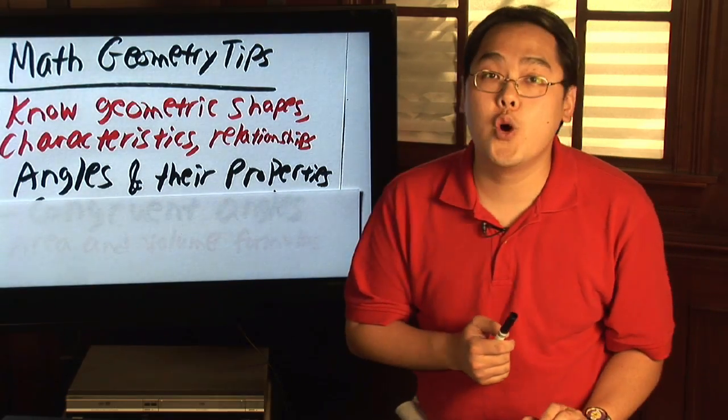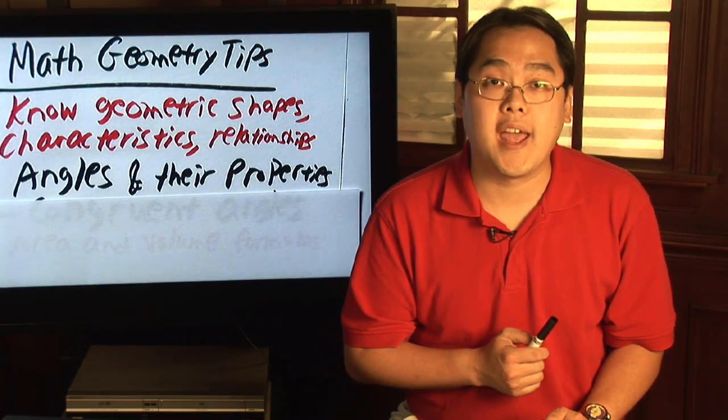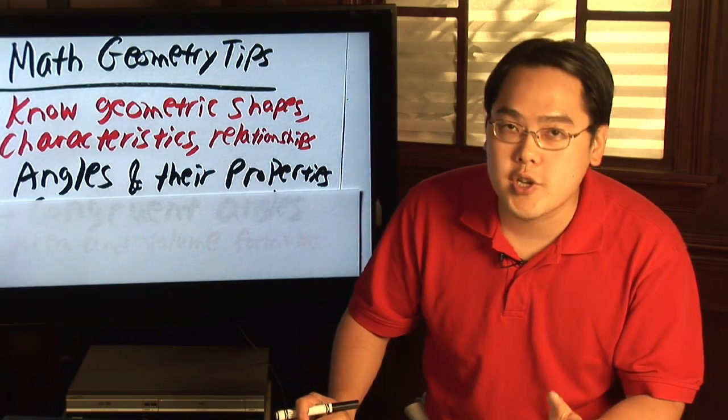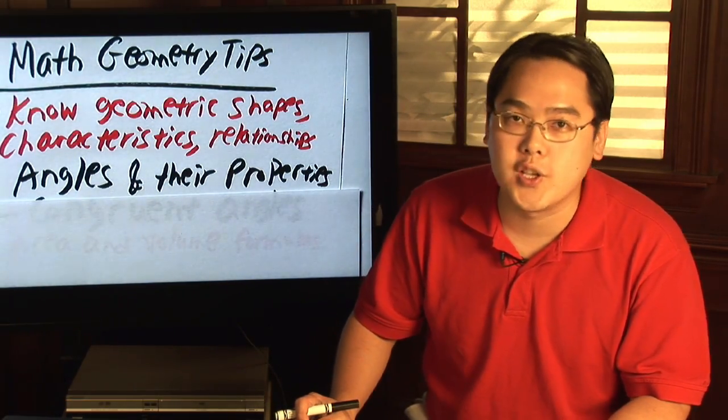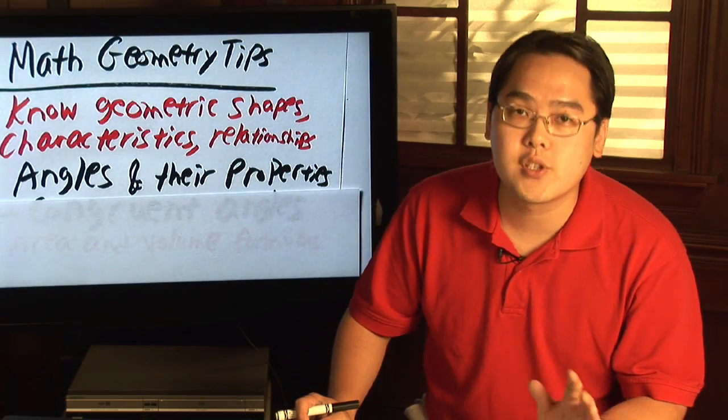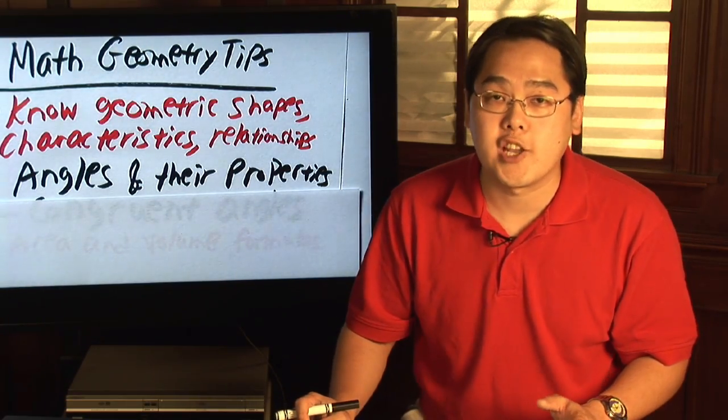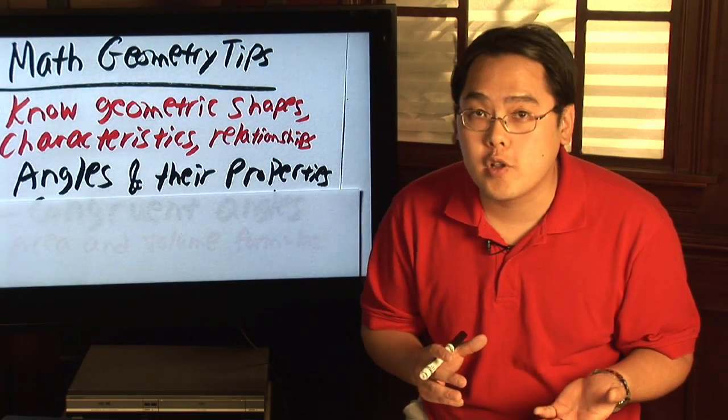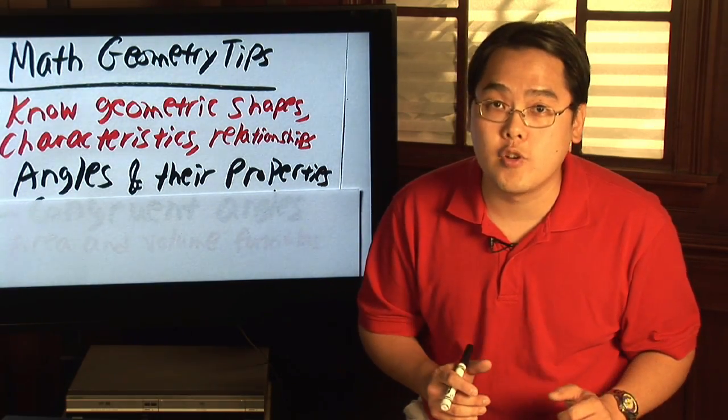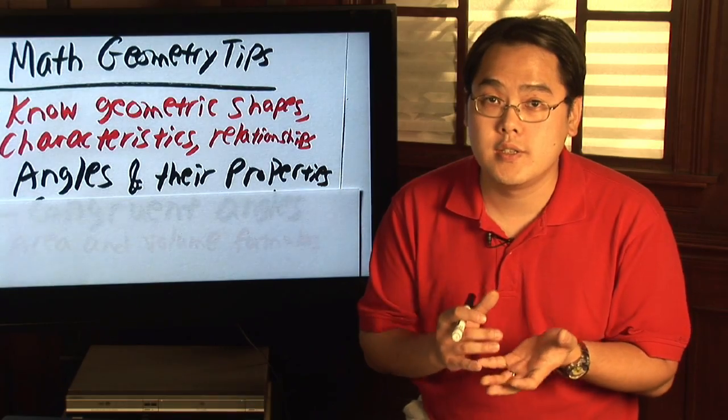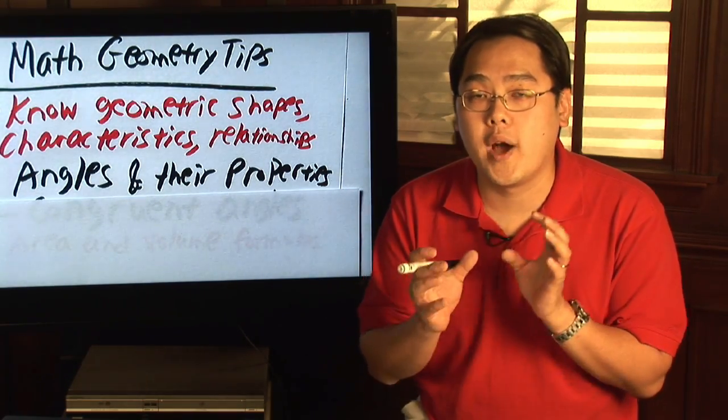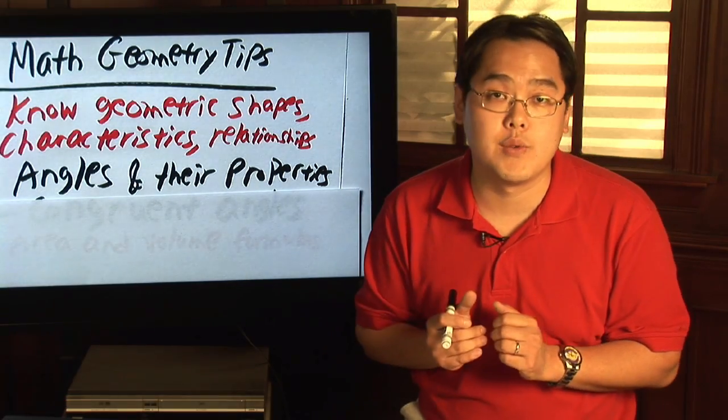Also important is knowing the various kinds of angles and their properties. There's complementary angles, supplementary angles, right angles, acute angles, vertical angles—a lot of angles and their properties, and chances are a lot of those properties overlap. Again, the more familiar you are with those, the better off you'll be, because they often come into play when you have to prove certain things, especially proving why certain parts are congruent to each other.